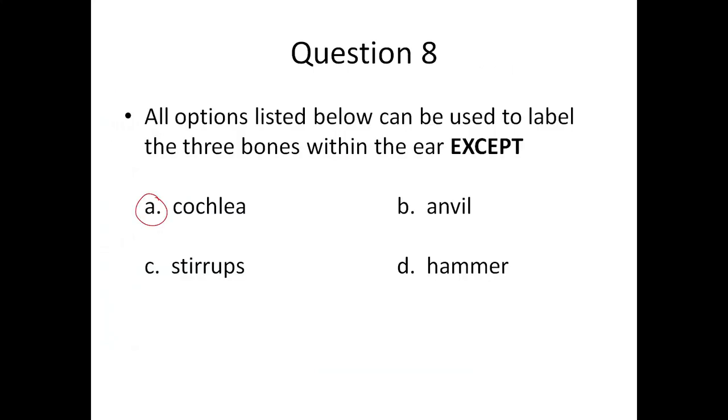Eight: All options listed above can be used to label the three bones within the ear except the cochlea. The cochlea is not the three bones. The three bones are anvil, stirrups, hammer. The cochlea is snail shaped, like the shell.